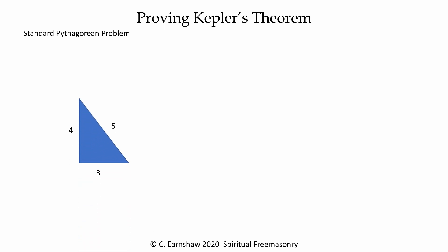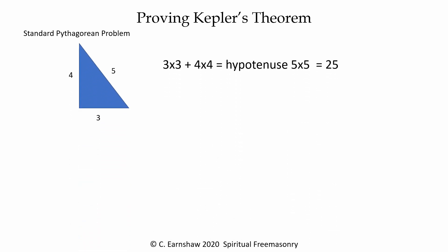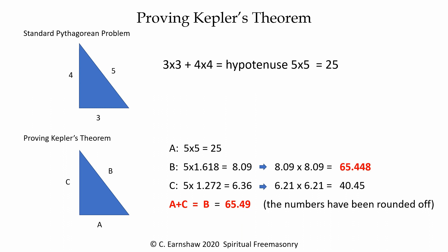At school we are taught the Pythagorean theorem using the sides 3, 4, and 5. Using Kepler's theorem, we only need to know one side. Taking the integer of 5, we can use his theorem to prove the other two sides.